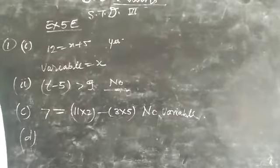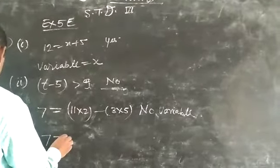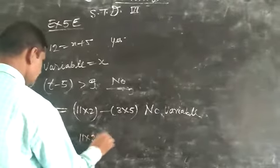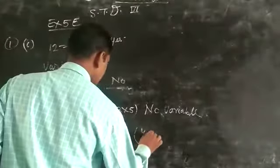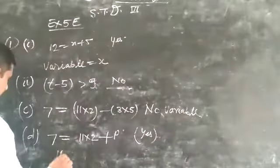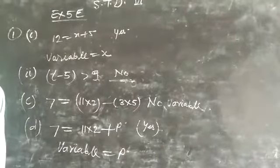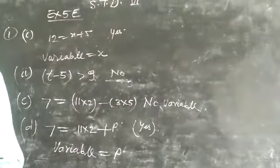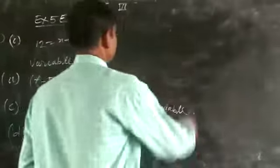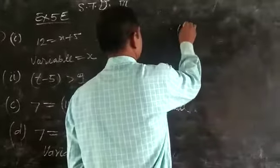Part (d): 7 = 2 plus 3. This is an equation, but with no variable. If only digits, then no variable.